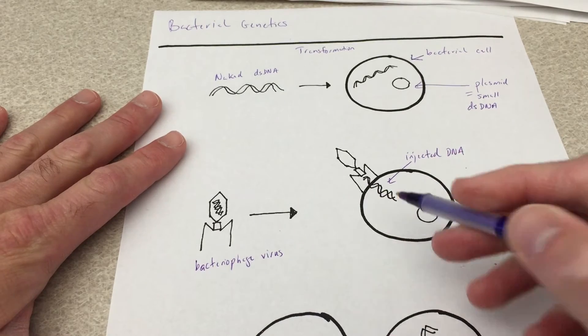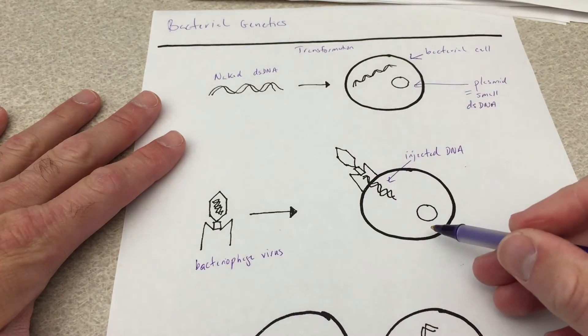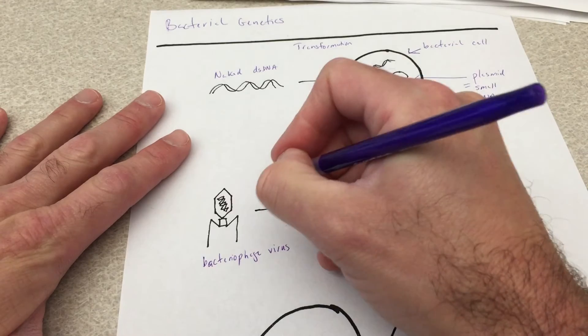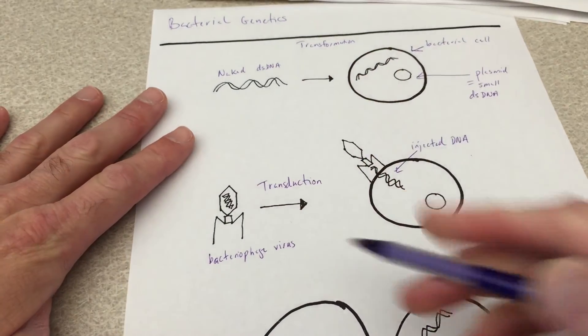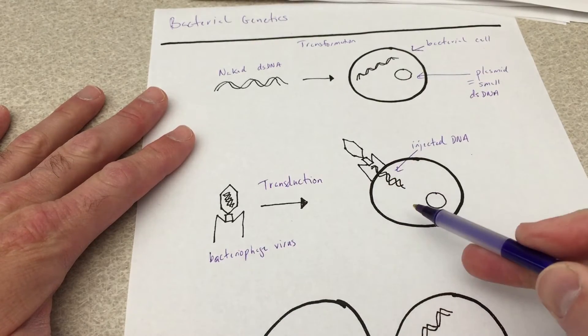That can then be transduced into the cell. So this mechanism is known as transduction of foreign DNA into a bacterial cell.